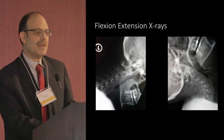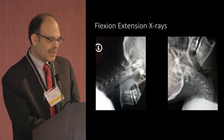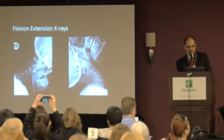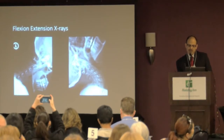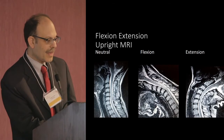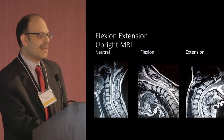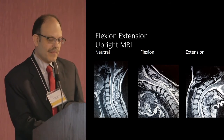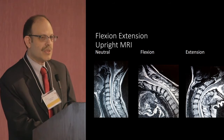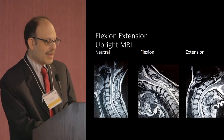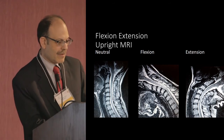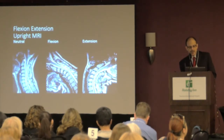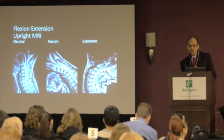In flexion-extension — bending forward and bending back — we can see how much movement there is in the angle. MRI is useful for motion when we have upright flexion and extension images. The main advantage of MRI is we see soft tissue in addition to bone. We can also look at the skull base, the brain stem, and the cervical spine. When there's abnormal motion, we can see that as well.